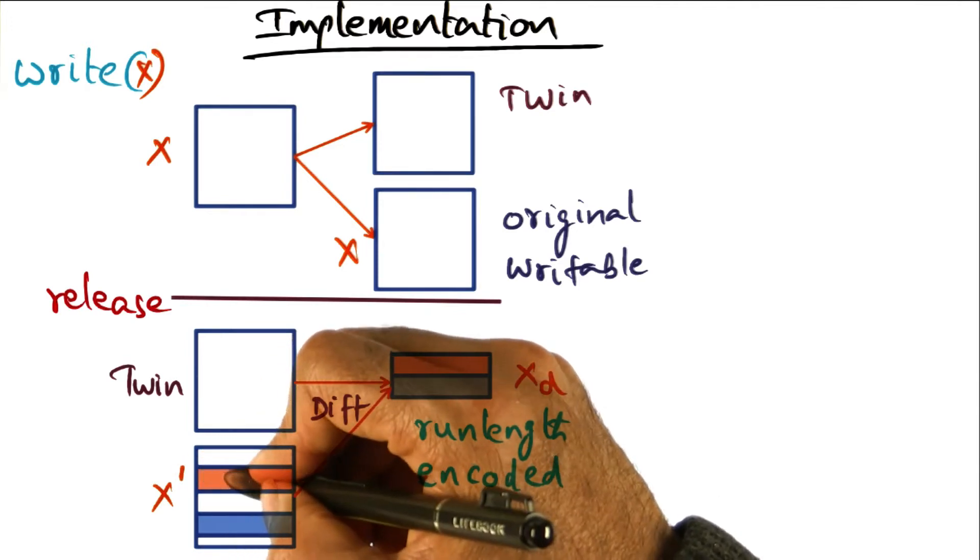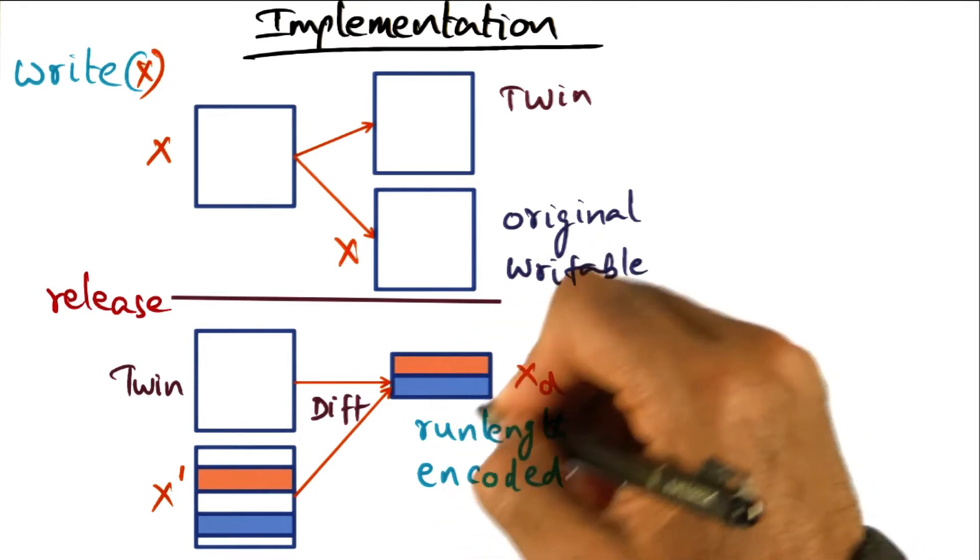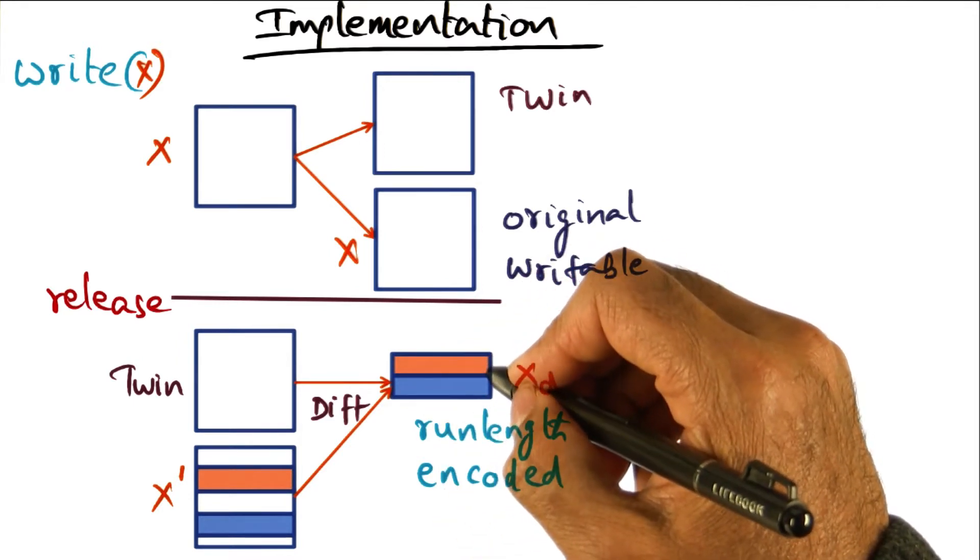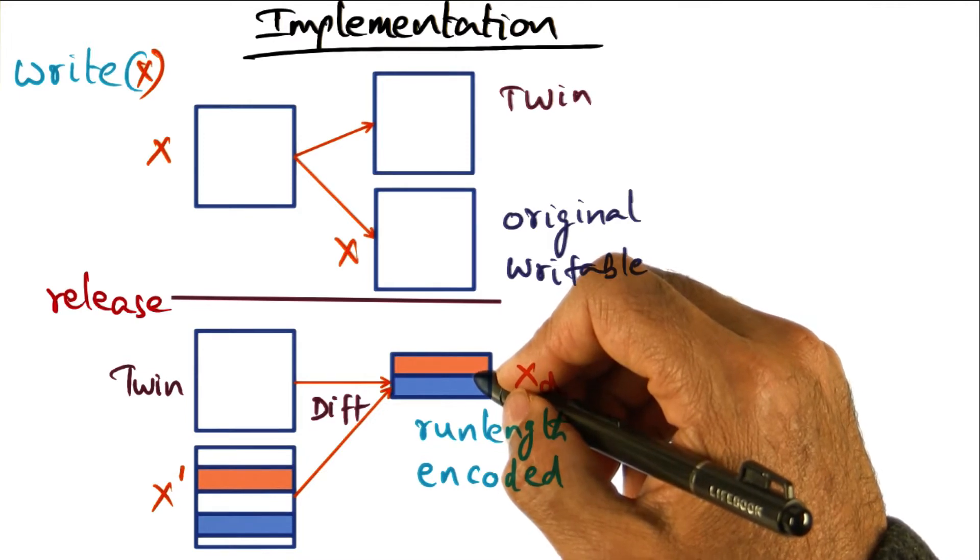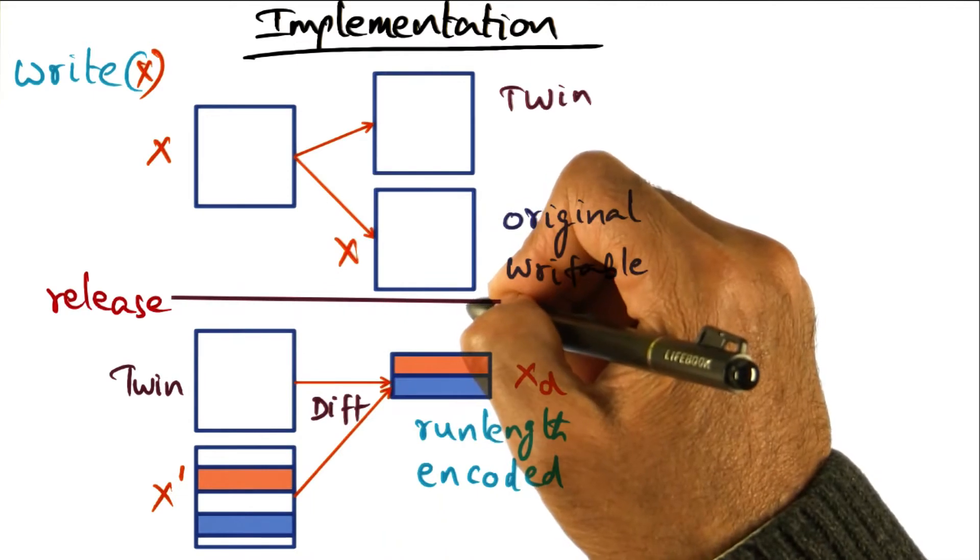This is the starting point for the change, and there's the amount of change, and there's the content of the change. The diff is a data structure that has been created by the DSM software to remember the changes that have been made to this page X prior to the release.